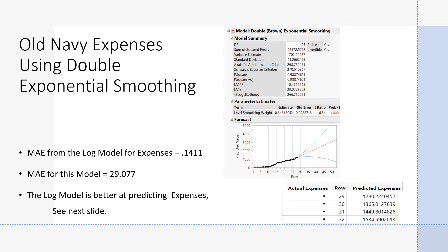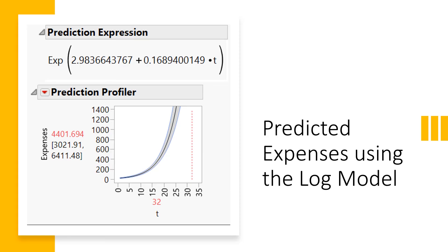But let's go back and look at our good model. Here's the prediction expression. I used the prediction profiler and plugged in time period 32 — quarter 4, a multiple of 4, of 2020, the next year. My predicted expenses would be 4,401.69. The 95% confidence intervals are in the brackets, so we're 95% confident the mean expenses would fall between those two values.